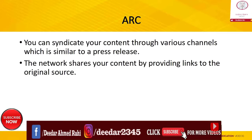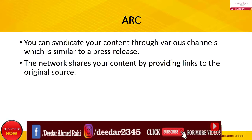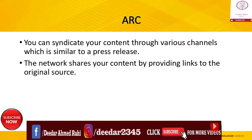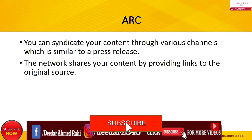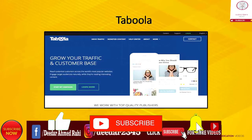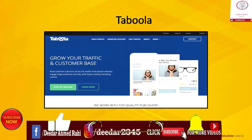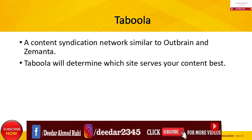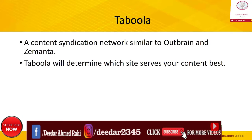The fifth network is Taboola. Taboola is a content syndication network similar to Outbrain and Zemanta. It has a variety of publishers. The content they often publish includes blog posts, videos, and other branded content to publishers. The links they provide will lead the audience back to the original source of content. Taboola will determine which sites serve your content best, and over time, these selected sites are where you will get the best engagement.